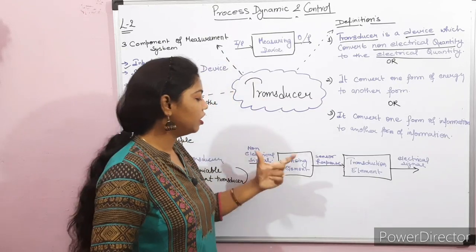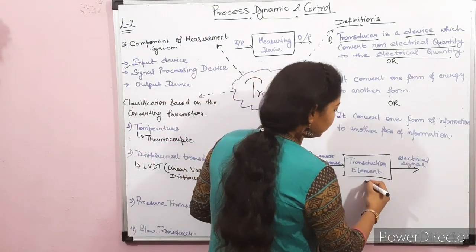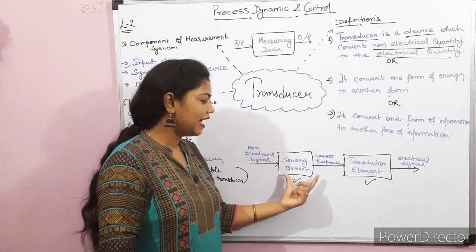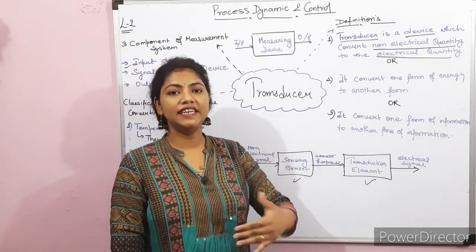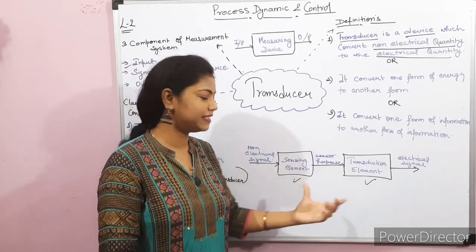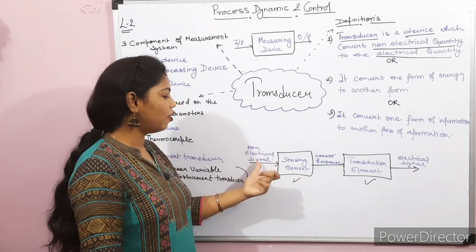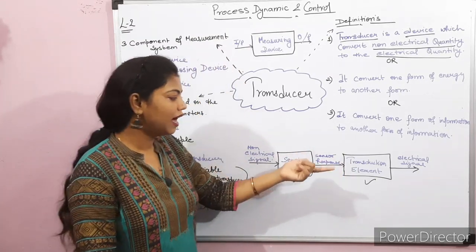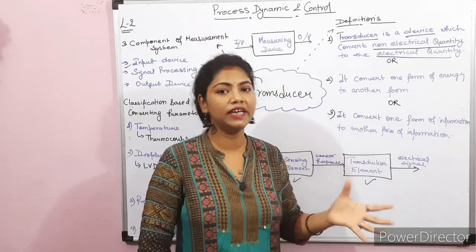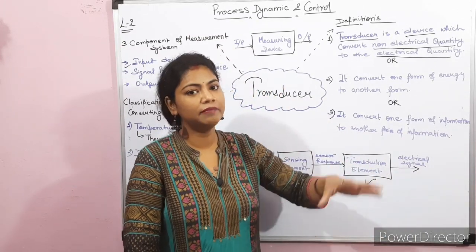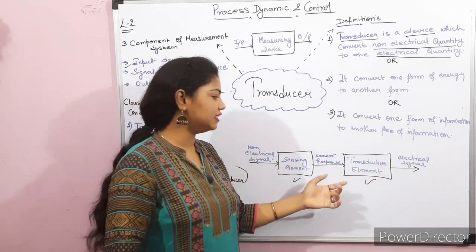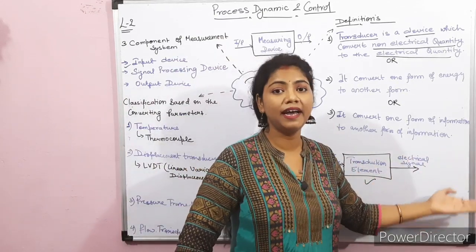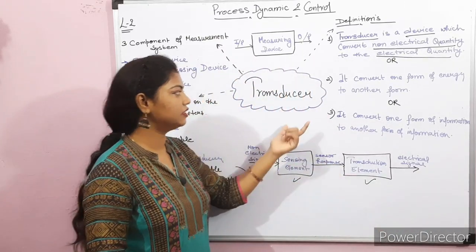There are two components of a transducer. The first component is the sensing element and the second is the transduction element. The sensing element is basically a sensor which reads the non-electrical signal — it senses the non-electrical signal and gives its response. The transduction element then converts that non-electrical quantity to an electrical quantity, or one form of energy to another form of energy. The sensor response passes to the transduction element, and finally we get an electrical signal output.